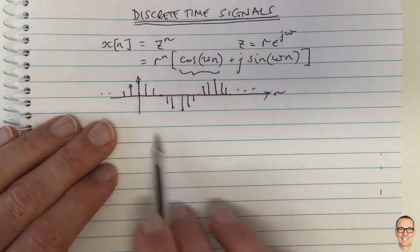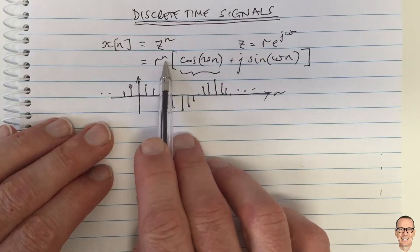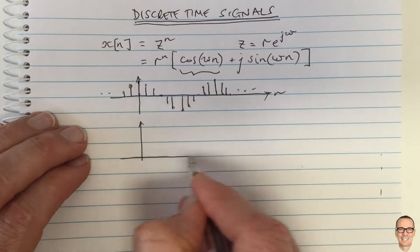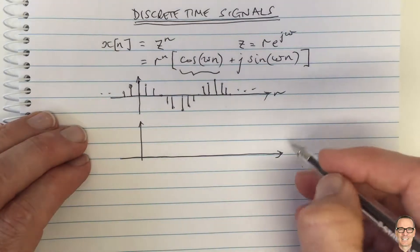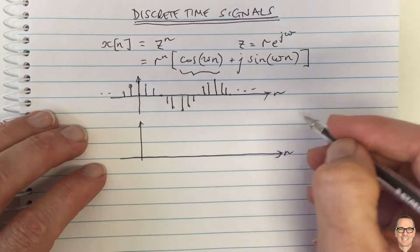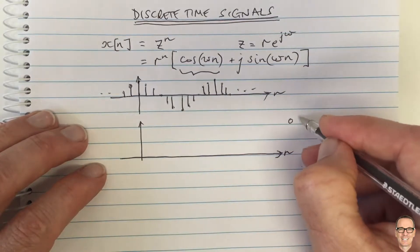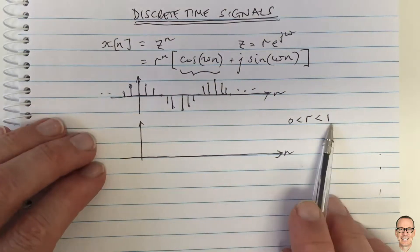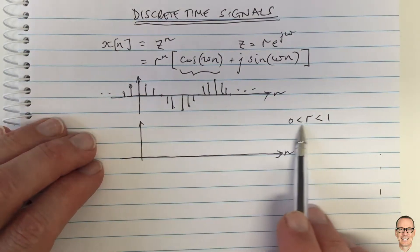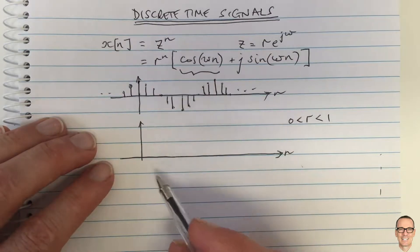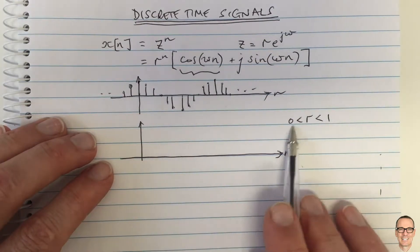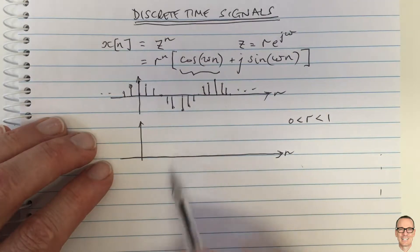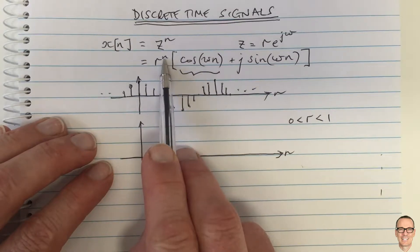This is the cos component. Now let's plot the r^n component to see what that's like. r^n is interesting. I'm going to plot it for a value of r between 0 and 1. I'll leave it for you to think about what happens when r is less than 0, and in fact I'll tell you what happens. It means that you oscillate every integer between positive and negative because when